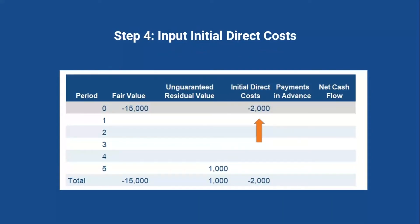Now we have the input for initial direct costs. These are costs incurred by the lessor to get into the lease that wouldn't have been incurred otherwise. Initial direct costs are a cash outflow — a negative value — for the lessor, so they're entered as negative $2,000 in period zero, since they occurred before or at lease commencement.